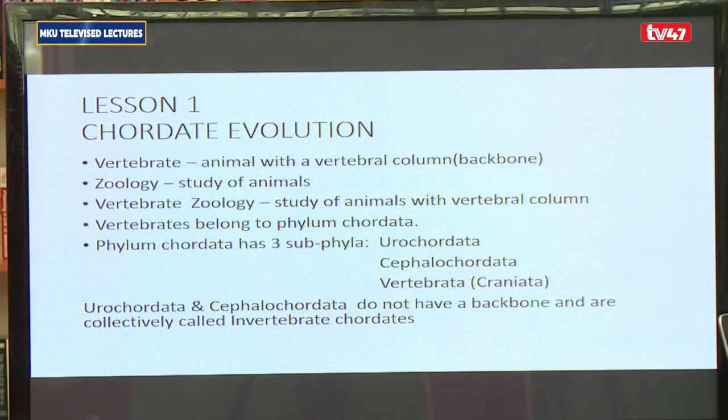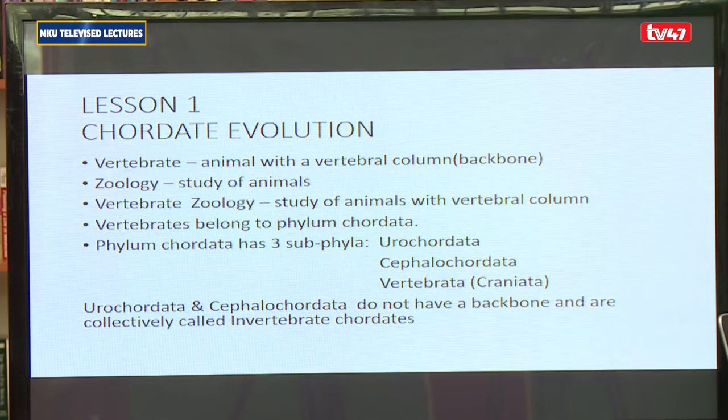For the vertebrates, they belong in the animal kingdom, and in the phylum chordata. The phylum chordata tends to be the phylum that contains a bit of the more complex organisms, and it basically contains animals. The phylum has three subphyla. The three subphyla we find in phylum chordata are: the subphylum urochordata, the subphylum cephalochordata, and the subphylum vertebrata, also referred to as craniata.